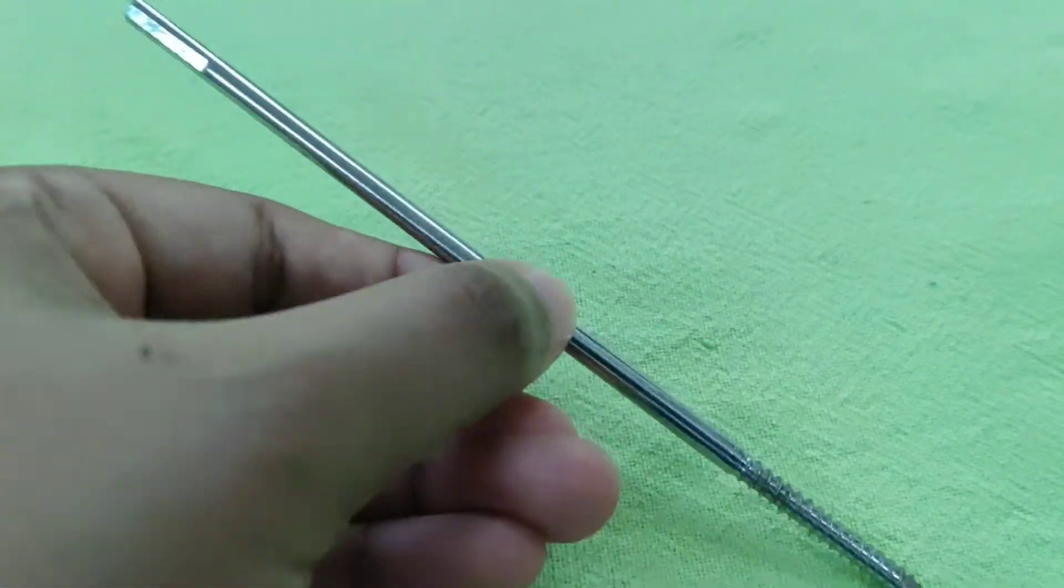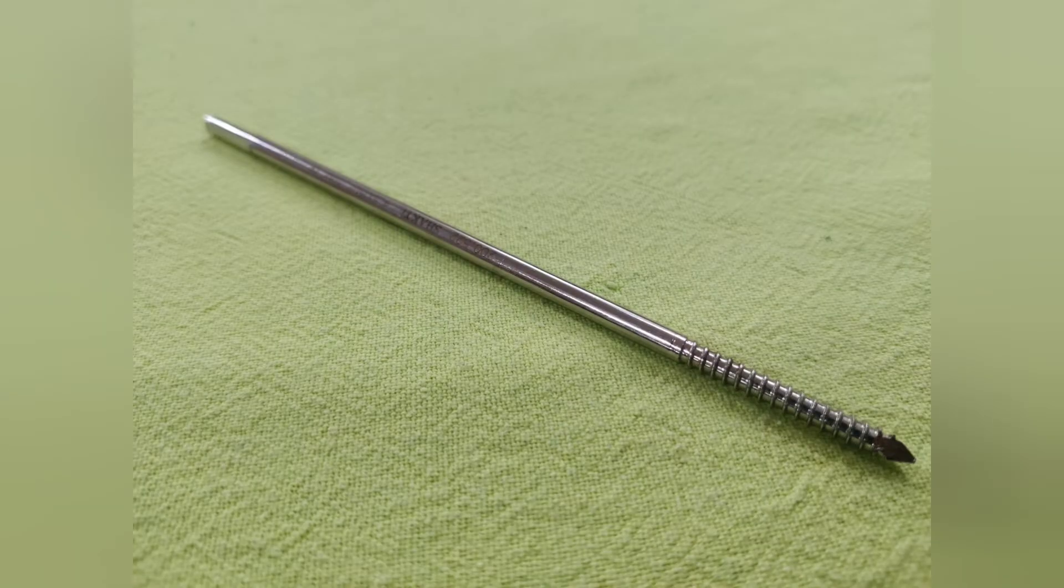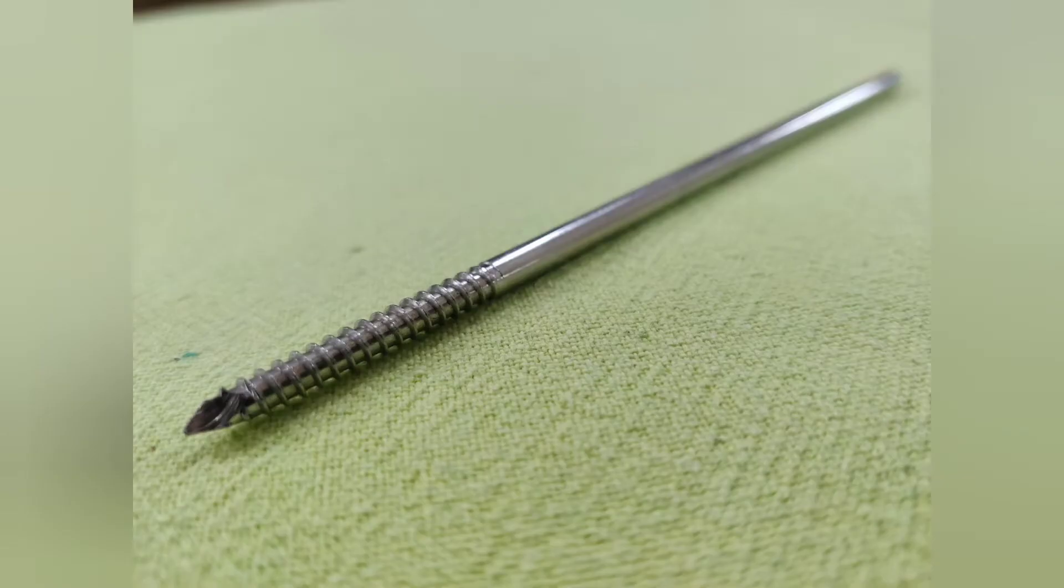For radius and ulna, 3.5 mm and metacarpal and metatarsal bone, 2.5 mm shine screw is preferred. And shine screw is a component of AO external fixator frame.